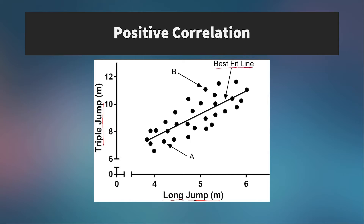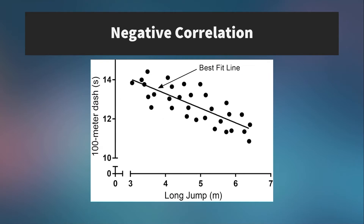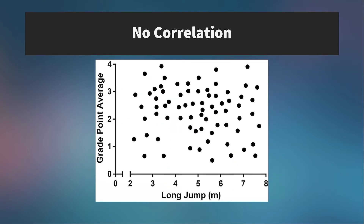The line of best fit is calculated by minimizing the x and y deviations from the line. Here is an example of a negative correlation: 100-meter dash time on the y-axis and long jump distance on the x-axis. Notice that the further you can long jump, your predicted 100-meter dash time is lower according to the line of best fit. And in this case, there is no correlation — two completely unrelated variables: grade point average and long jump ability.